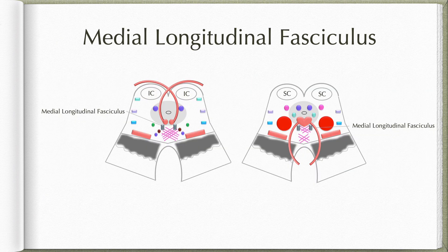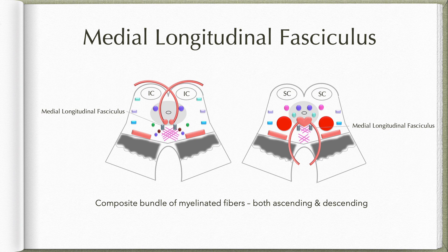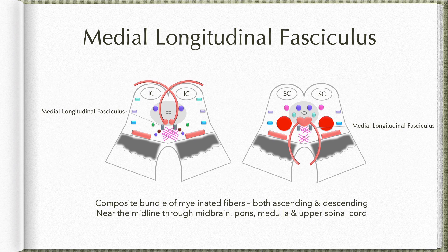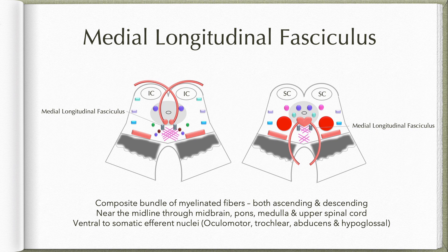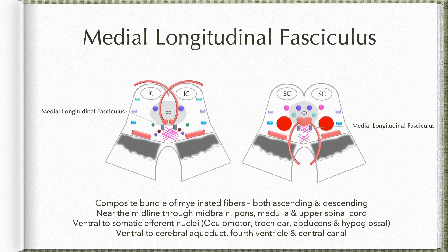Coming to the third composite bundle: the medial longitudinal fasciculus. This is again a composite fiber bundle made up of predominantly myelinated fibers, including both ascending and descending fibers. The medial longitudinal fasciculi are located close to the midline throughout the midbrain, pons, medulla, and upper segments of the spinal cord. They are located ventral to the somatic efferent nuclei — at the level of superior colliculi they are anterior to the oculomotor nuclei, at inferior colliculi they are anterior to the trochlear nuclei, in pons anterior to the abducens nuclei, and in medulla anterior to the hypoglossal nuclei. They are also anterior to the cerebral aqueduct, fourth ventricle, or central canal depending on the level.